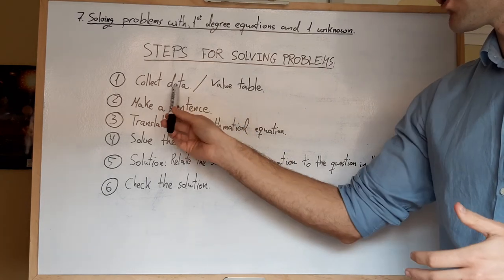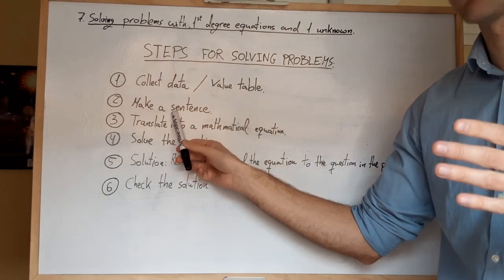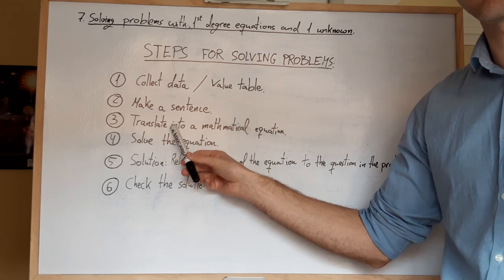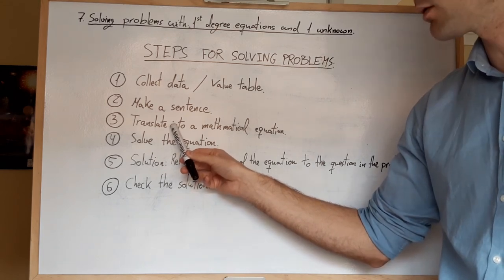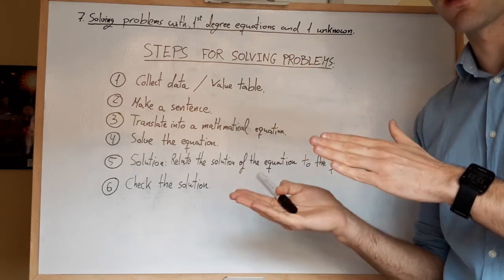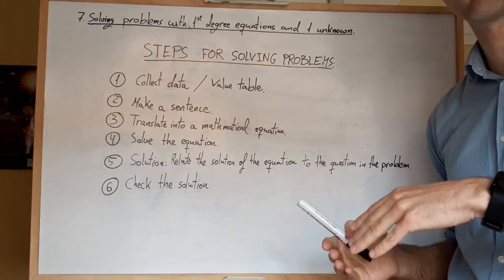Repito, primer paso, tomamos datos, quizás en forma de tabla, si es necesario. Segundo, construimos una oración en lenguaje escrito. Tercero, convertimos esa oración en una ecuación. Cuarto, la resolvemos. Quinto, encontramos la relación entre la solución de la ecuación y lo que nos preguntan en el problema. Y sexto, hacemos la comprobación.